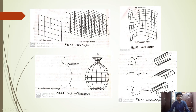The plane surface is the simplest form of surface representation. To form an infinite plane, we generally require three non-coincident points to define an infinite plane surface. This is the simplest form of a surface.